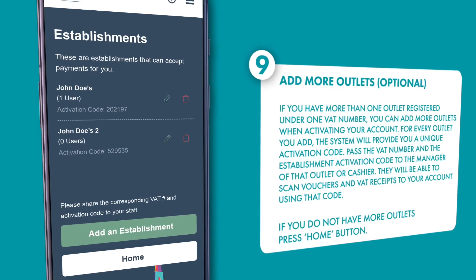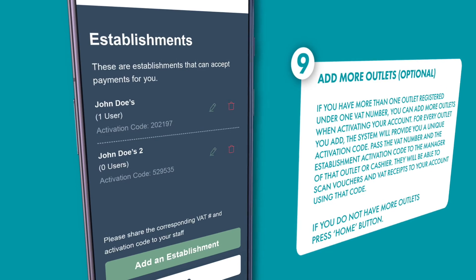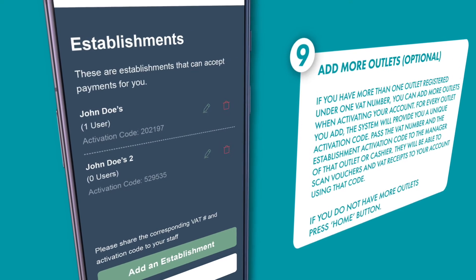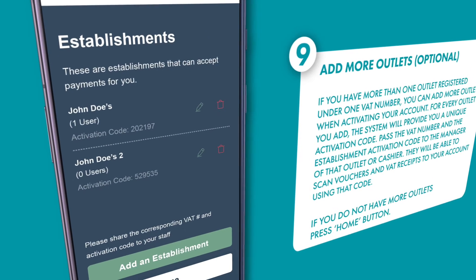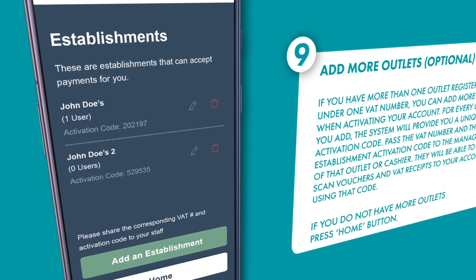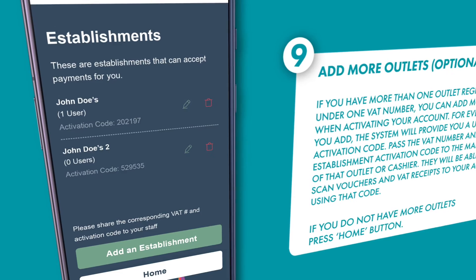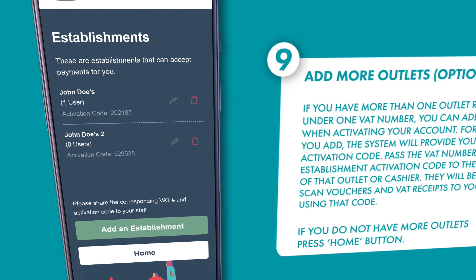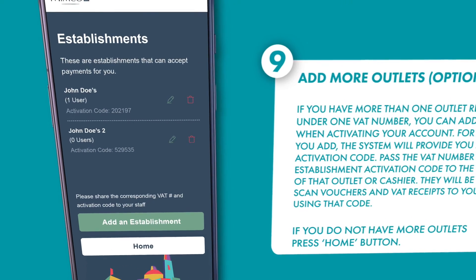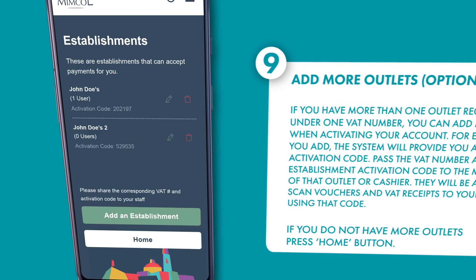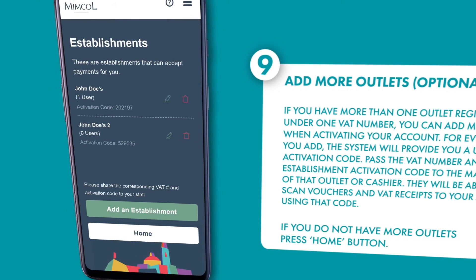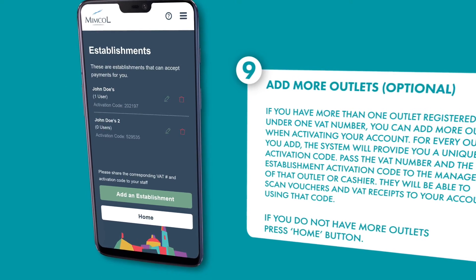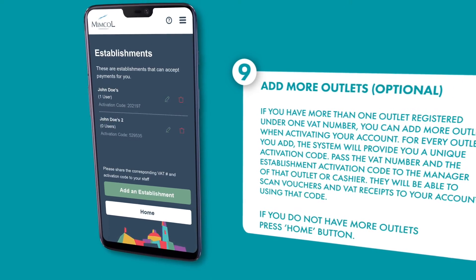For every outlet you add, the system will provide you a unique activation code. Pass the VAT number and the establishment activation code to the manager of that outlet or cashier. They will be able to scan vouchers and VAT receipts to your account using that code.